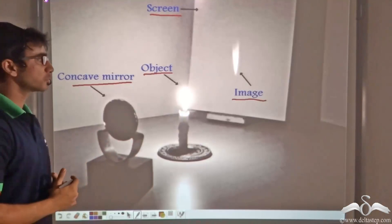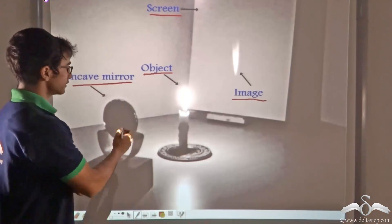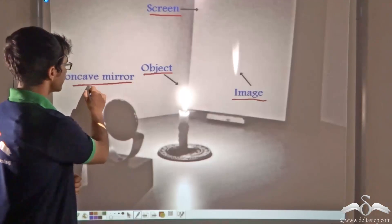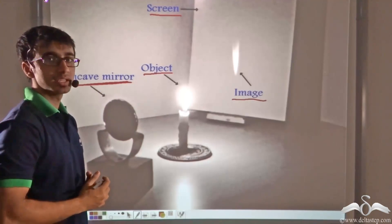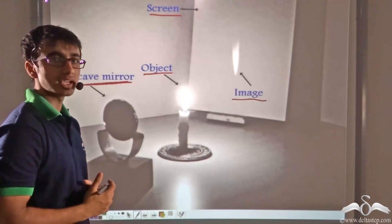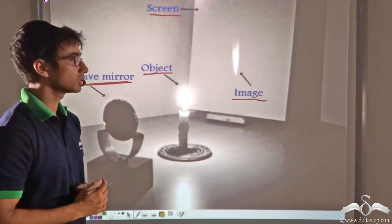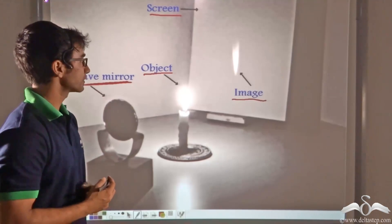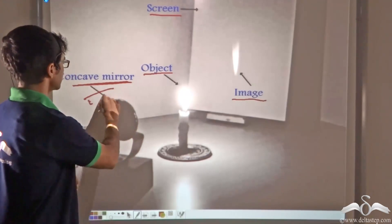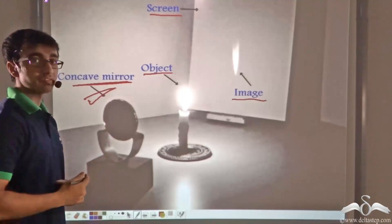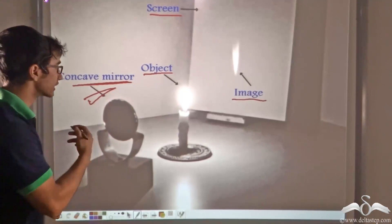Now if we have to find out the focal length of this concave mirror through this experimental setup, can you tell me how it can be found? We are going to find out how, with the help of this experimental setup, we can find out the focal length of the concave mirror.